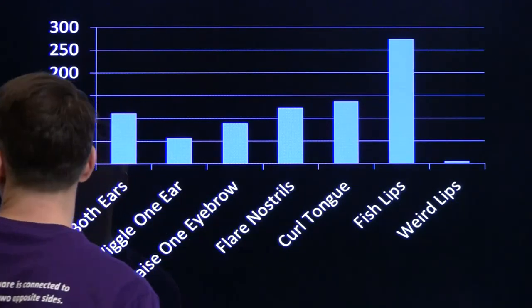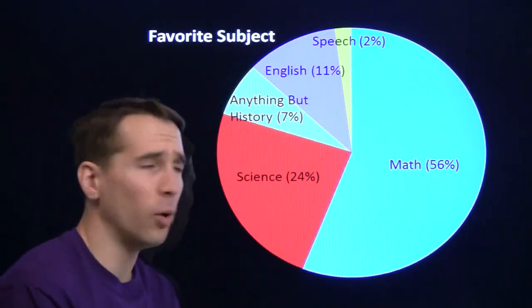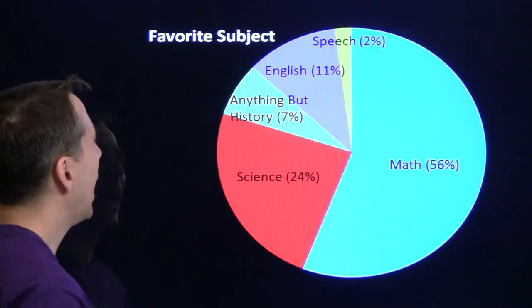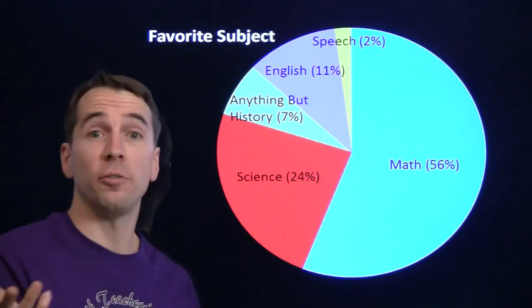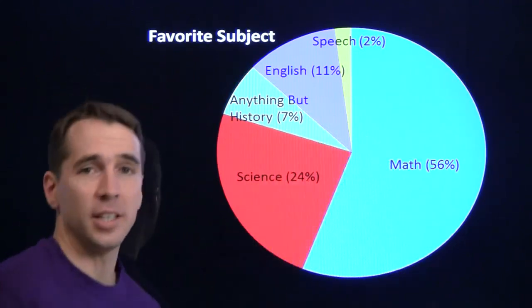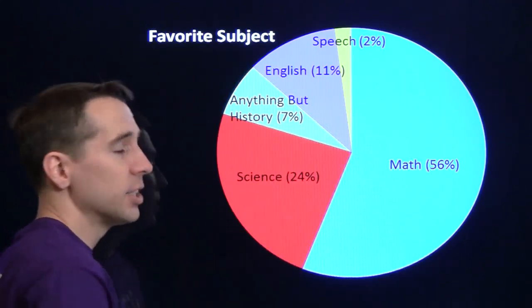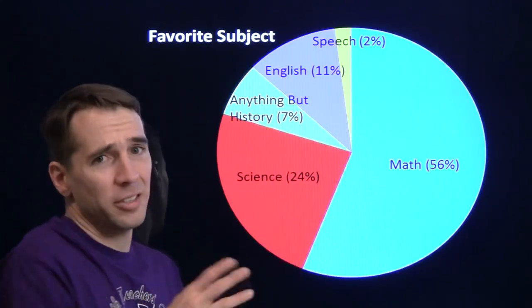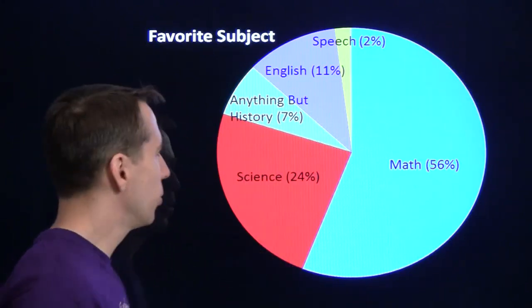Let's take a look at another type of chart. Here, we had another poll of all of our students. And we asked them, what's your favorite subject? Now remember, this is Art of Problem Solving students, so there's some selection bias here. 56% said math, and 24% said science, and math is the language of science, so that's okay by us.